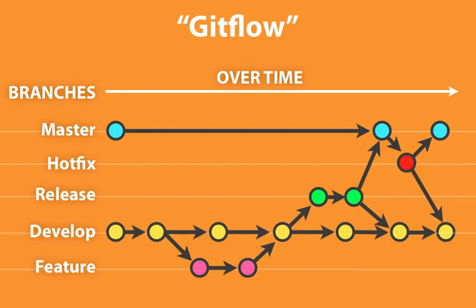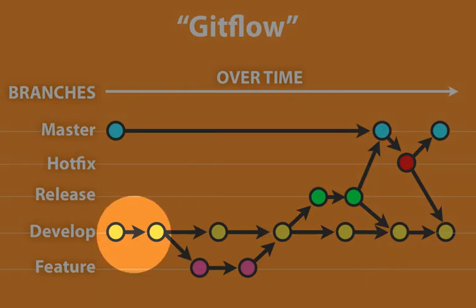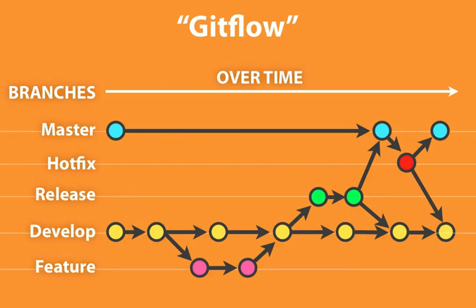But there's still a couple of problems with that model, which is since we're using our development branch in order to push directly to production, that development branch could have some immature features or some changes that we don't intend to push. Also it doesn't really give us a chance to test out our release code before we put it into production.